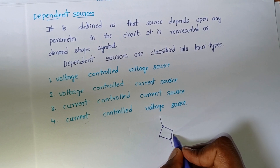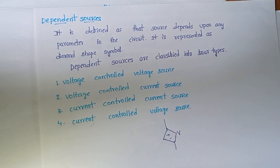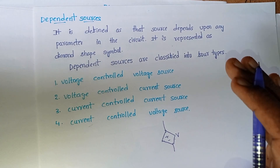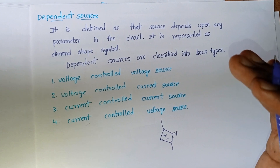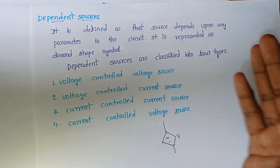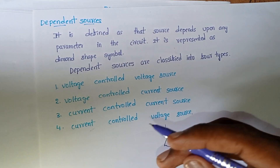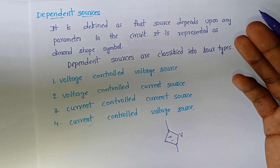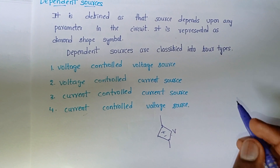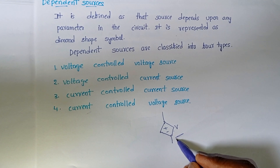Independent sources are the sources which do not depend on the circuit elements. The sources which depend on the circuit elements — that is, whose values change according to the parameters of the circuit — are known as dependent sources. Dependent sources are represented using a diamond-shaped symbol, whereas independent sources are represented as circles.